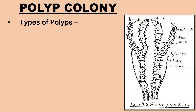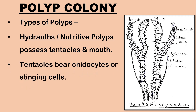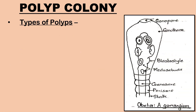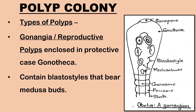There are different types of polyps. Hydranth or nutritive polyps possess tentacles and a mouth. Tentacles bear cnidocytes which are responsible for capturing, ingesting and digesting food for the whole colony. Gonangium or reproductive polyps are cylindrical in shape and are enclosed in a transparent protective case known as gonotheca. These reproductive polyps contain a blastostyle that bears several medusa buds.